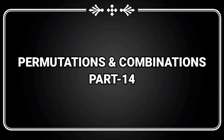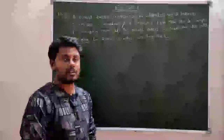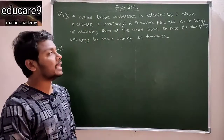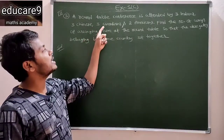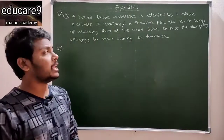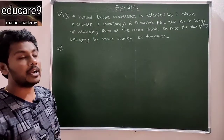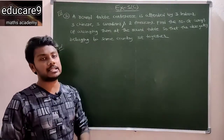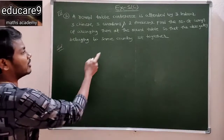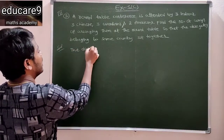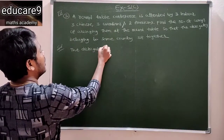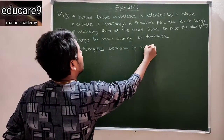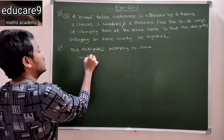Permutation and combination. A round table conference is attended by three Indians, three Chinese, three Canadians, and two Americans. We are finding the number of ways of seating them at the round table so that persons belonging to the same country sit together.